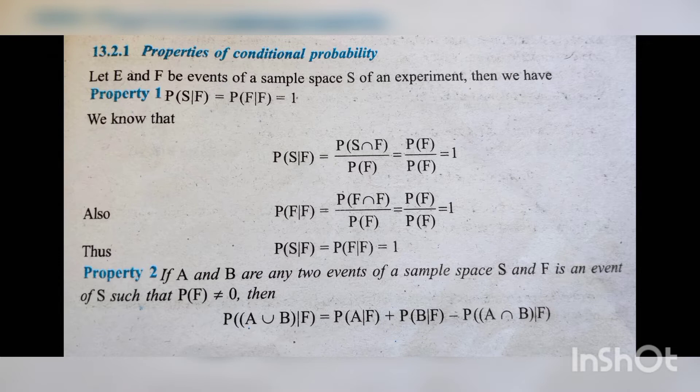Then we come to the second property. If A and B are any two events of sample space S, and F is an event of S such that P of F is not equal to 0, then P of A union B given F is equal to P of A given F plus P of B given F minus P of A intersection B given F.